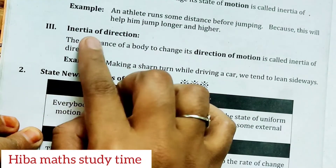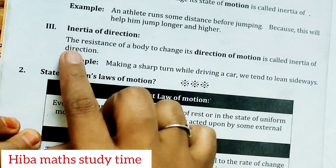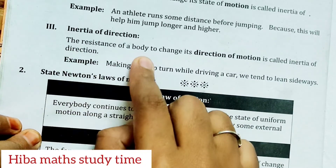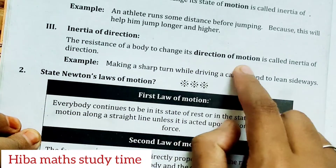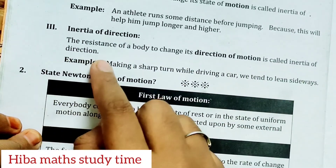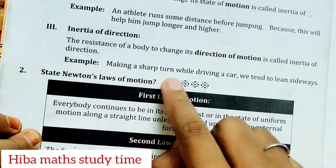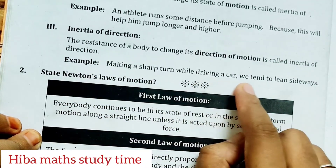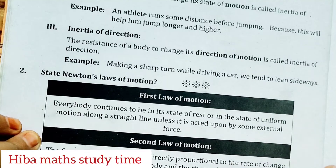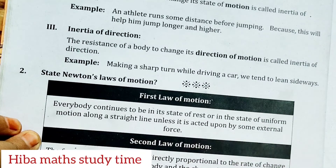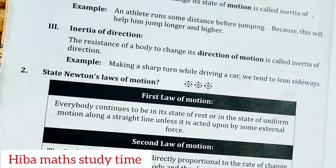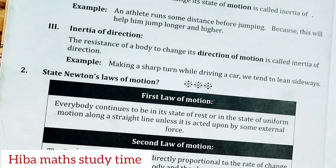Inertia of direction: the resistance of a body to change its direction of motion is called inertia of direction. Example: making a sharp turn while driving a car, we tend to lean sideways. When you turn the car, your body leans to the other side — that is the inertia of direction.